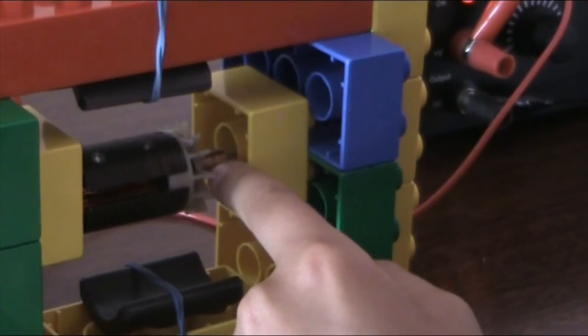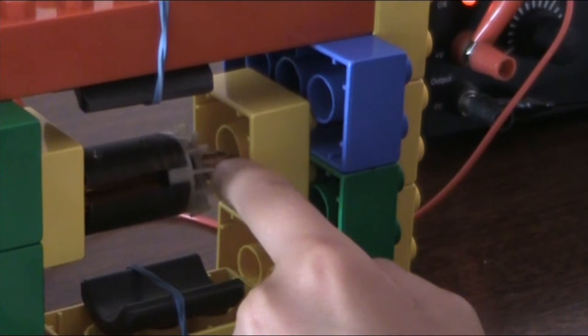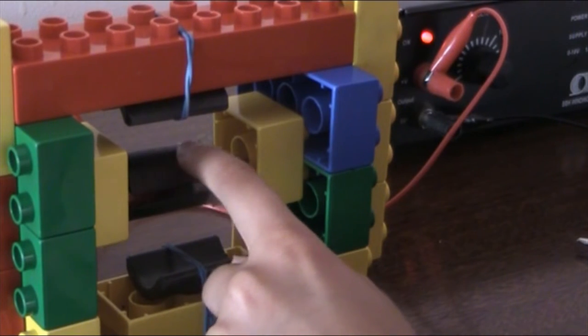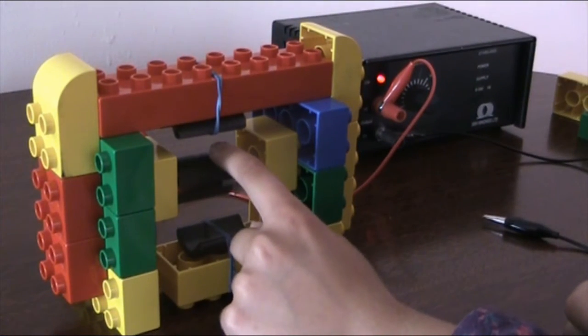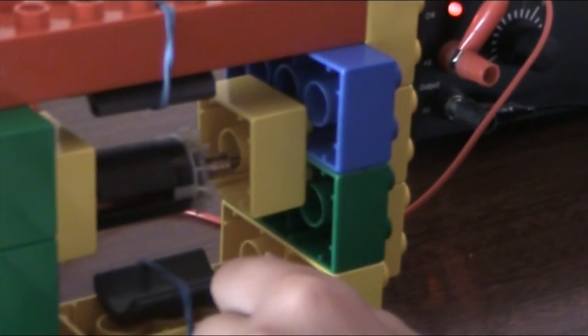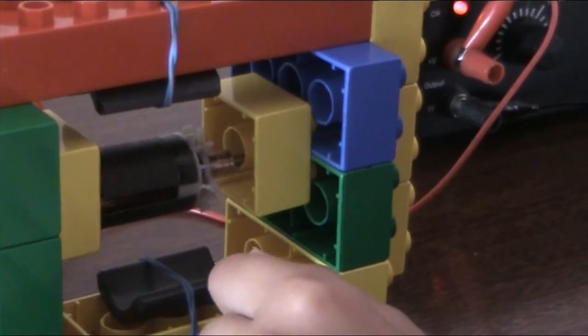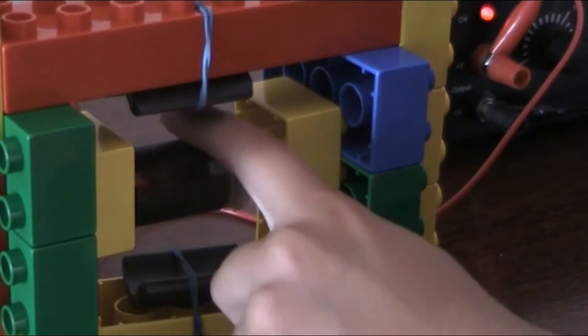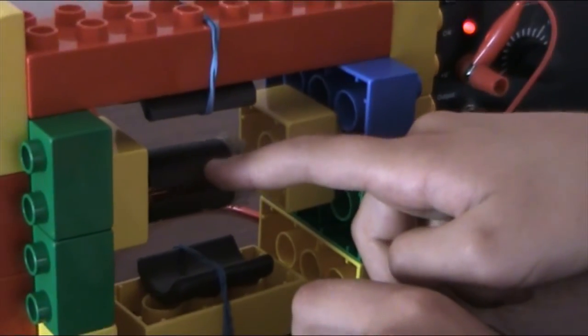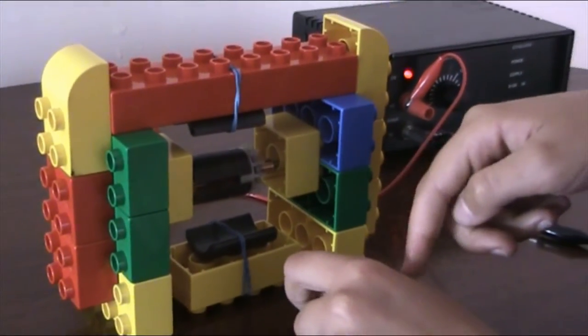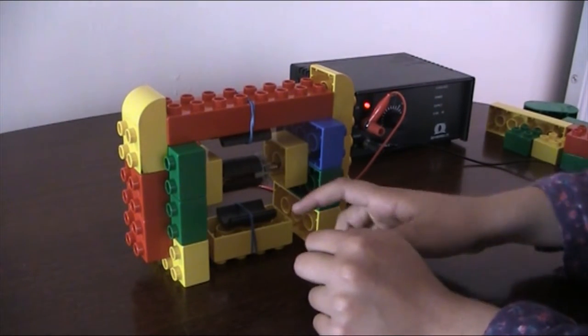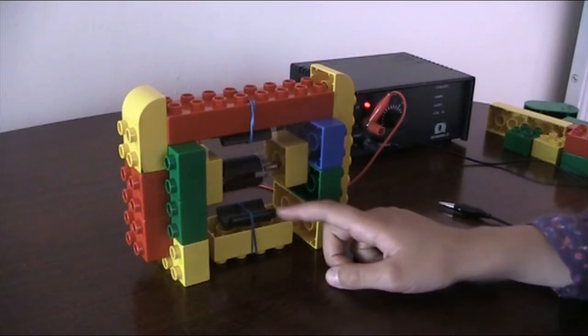The commutator sends electricity into one of these coils and it makes one of these magnetic. Then one of these magnets attract and one of them repels. It does a half turn and then another one of these gets magnetized and then it does another half turn. That's the principle of a DC motor and how it turns.